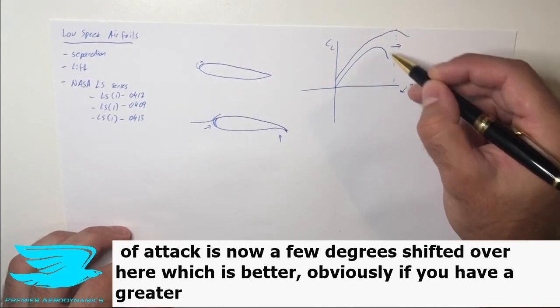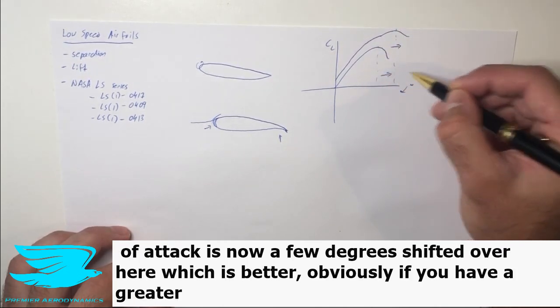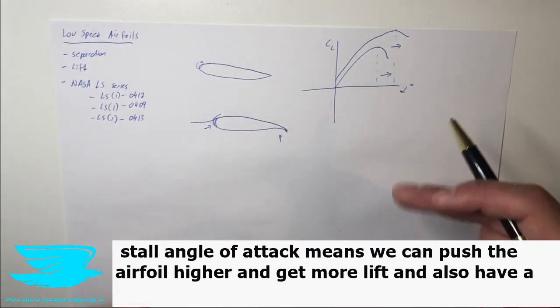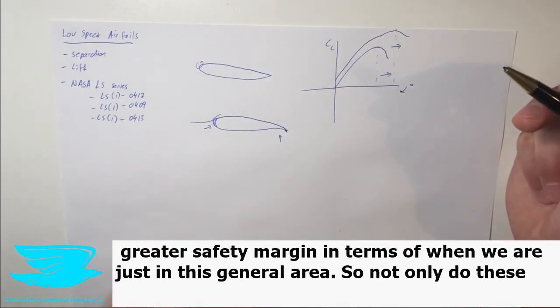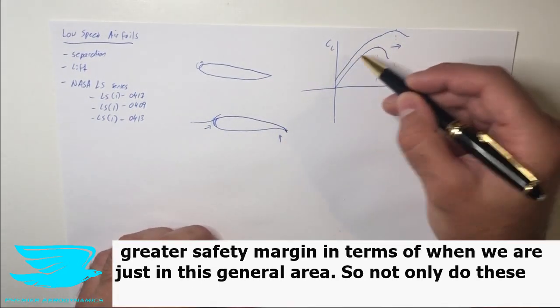So the stall angle of attack is now a few degrees shifted over here, which is better. Obviously if you have a greater stall angle of attack, means we can push the airfoil higher and get more lift and also have a greater safety margin in terms of when we are just in this general area.